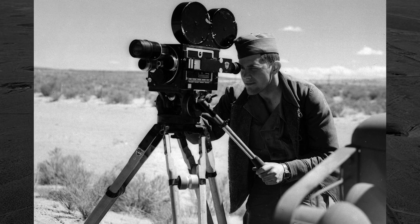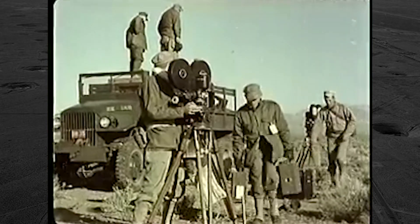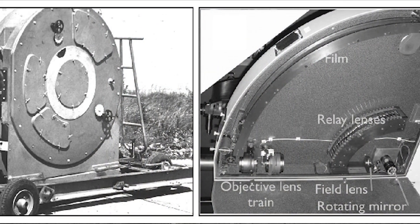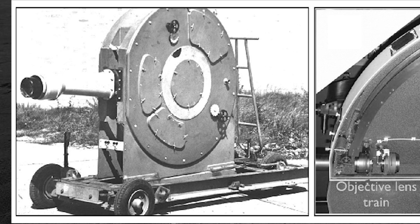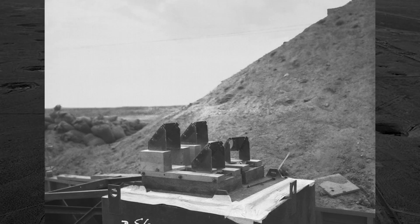Each test was captured with a large number of 16 and 35 millimeter cameras, filming the detonation from multiple angles and speeds — from a standard 24 frames per second in real-time to high-speed capture of 1,000 frames per second using the C4 rotating mirror high-speed camera. By counting the frames, scientists could calculate the speeds and velocity of the detonation, all without the use of supercomputers and 3D modeling. Pretty fascinating.